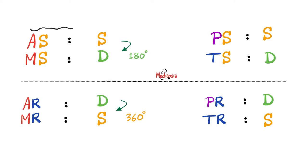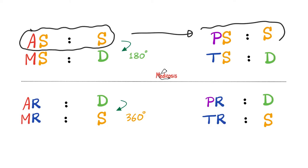If aortic stenosis is a systolic murmur, then similarly, pulmonic stenosis is a systolic murmur as well, because the pulmonic valve on the right side is equivalent to the aortic valve on the left side. For more on mitral stenosis, aortic regurgitation, mitral regurgitation, tricuspid stenosis, and others, there is a separate video for each one in the cardiology playlist.